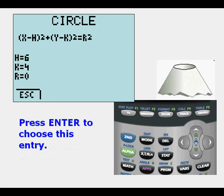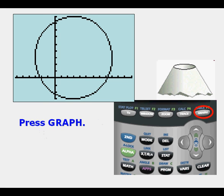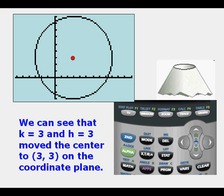We can press Enter to choose this entry, and we're going to enter h equals 3, k equals 3, and r equals 6. We press Graph, and this is what it looks like. We can see that k equals 3 and h equals 3 moved the center to 3, 3 on the coordinate plane.